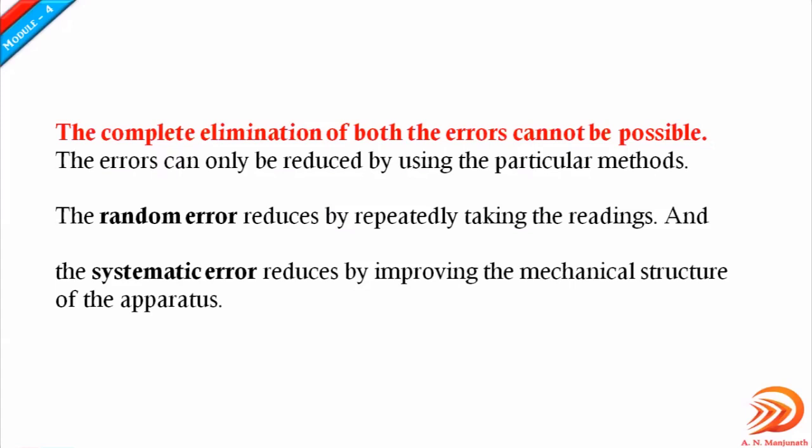For random error, it can be reduced by repetitively taking readings. For systematic error, it can be reduced by improving the mechanical structure of the instruments. That is about the classification of errors.